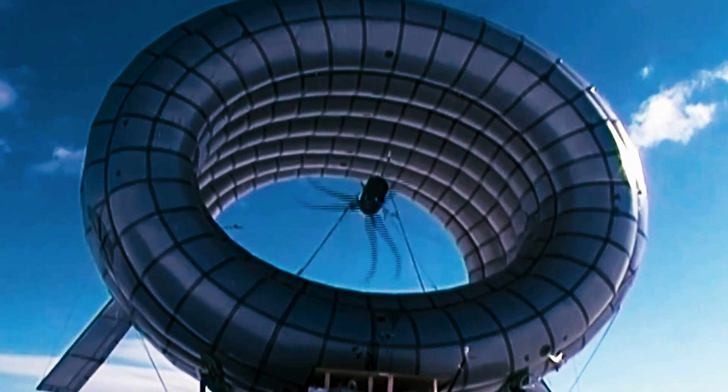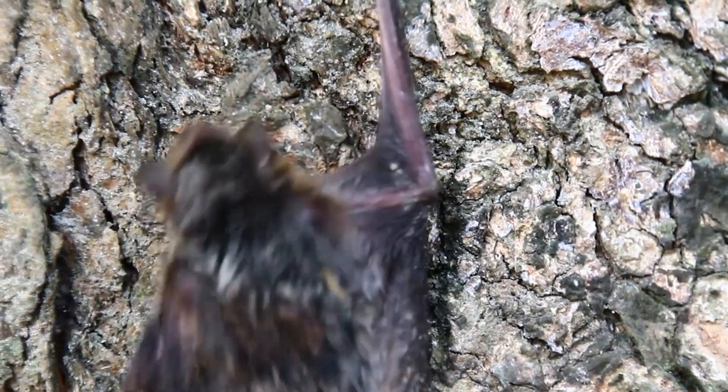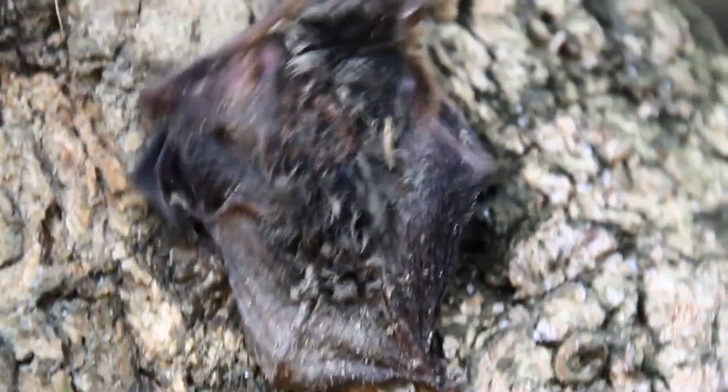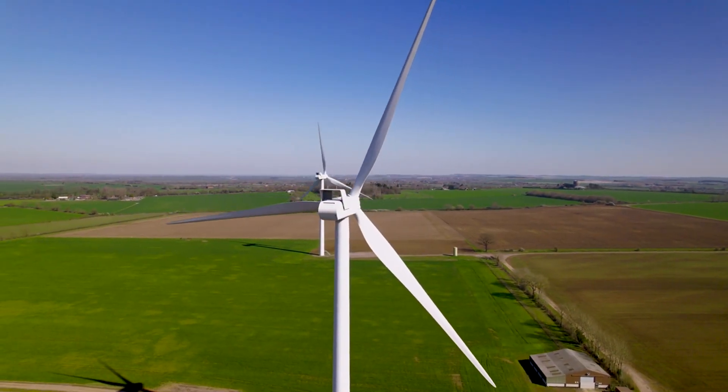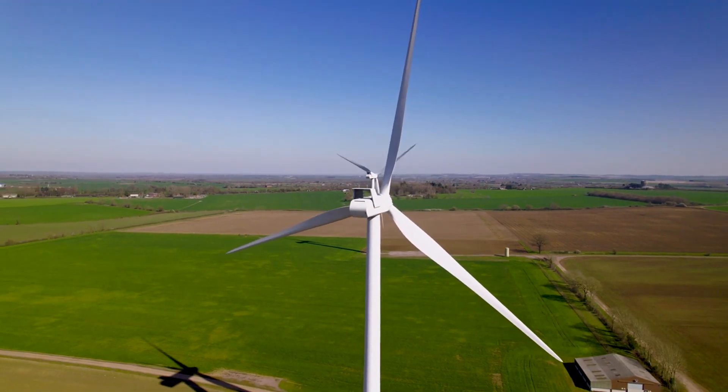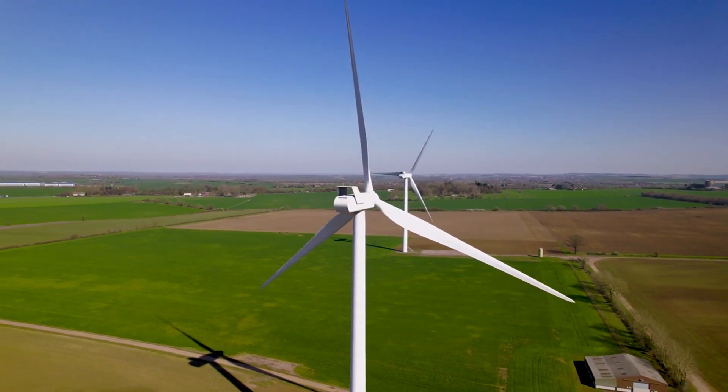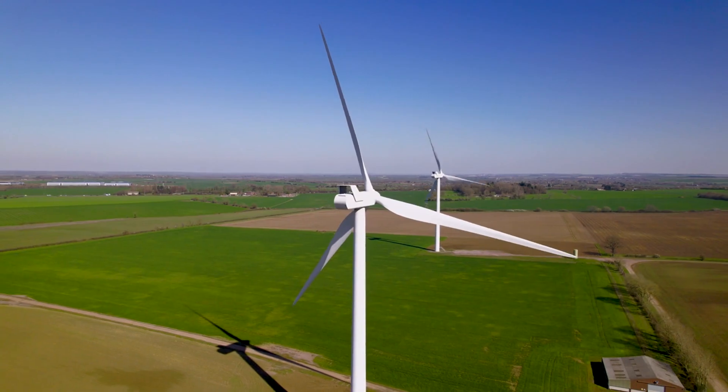Secondly, the BAT minimizes human and environmental impact through its unique siting and impact advantages. By accessing low-cost wind energy in locations with poor ground winds or logistical challenges, it reduces the overall footprint compared to traditional turbines.